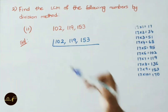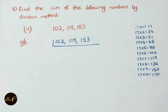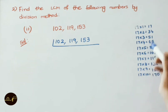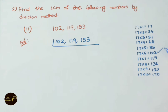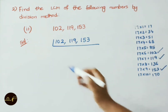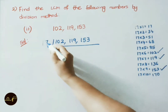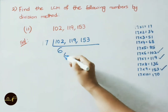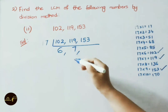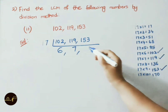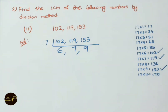Second sum: find LCM for 102, 119 and 153 using division method. Divide by 17: 17 × 6 = 102, 17 × 7 = 119, 17 × 9 = 153.